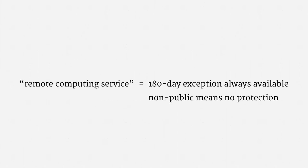I want to emphasize just two key differences in how the SCA treats remote computing services. First, the 180-day exception that we saw for email is always available. Under the SCA, investigators can always get content from a non-messaging service with just a D-order or a subpoena, so long as they eventually provide notice. Second, there is no statutory protection against the government for non-public services — private non-messaging services, under the SCA, can be just subpoenaed for everything. So under the SCA, non-messaging services receive less protection than messaging services.